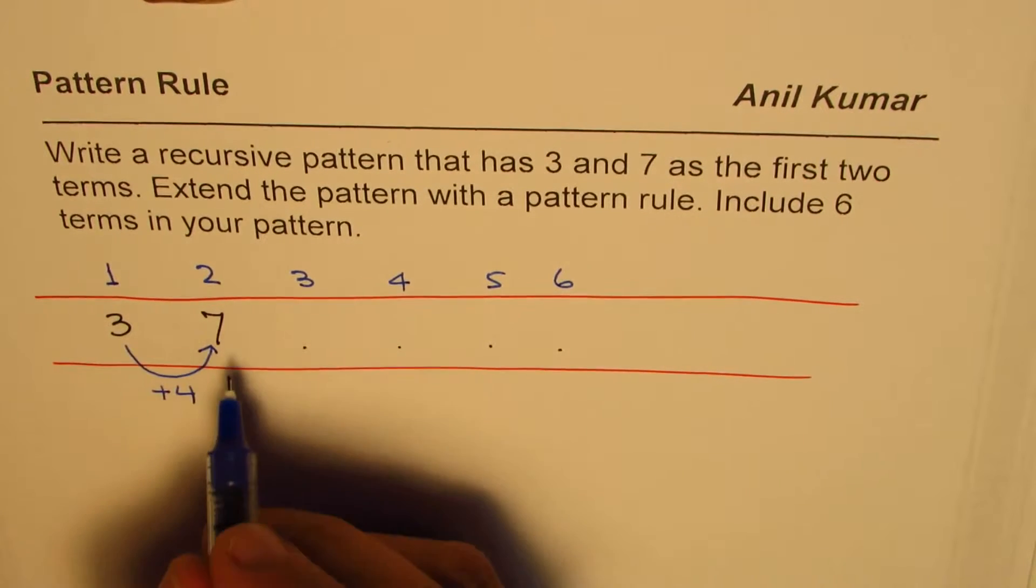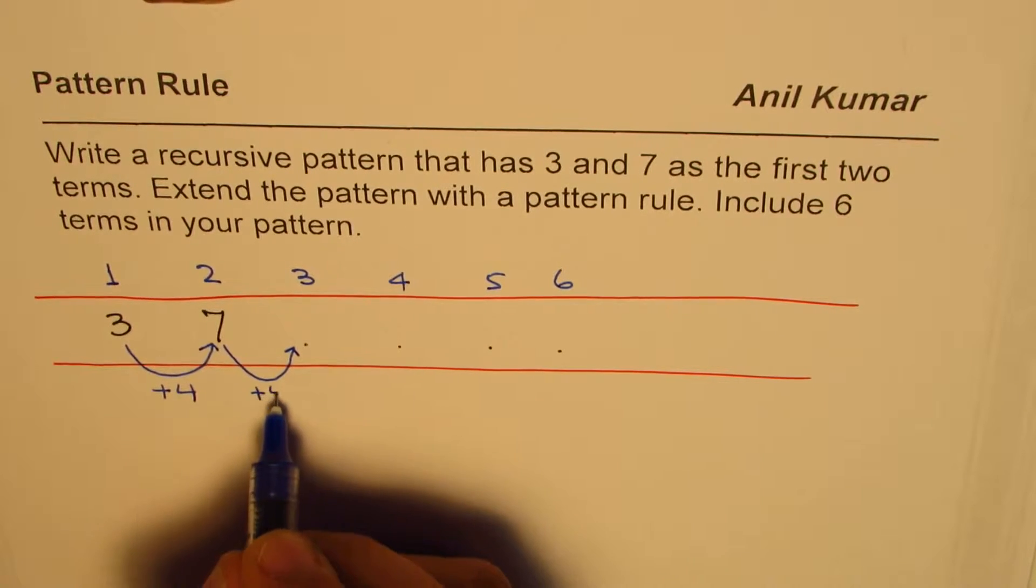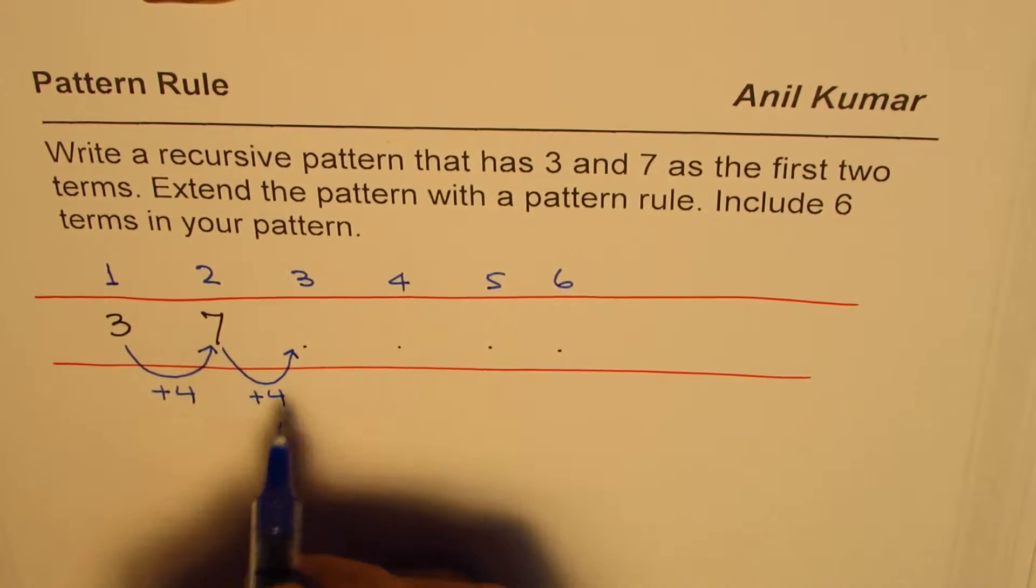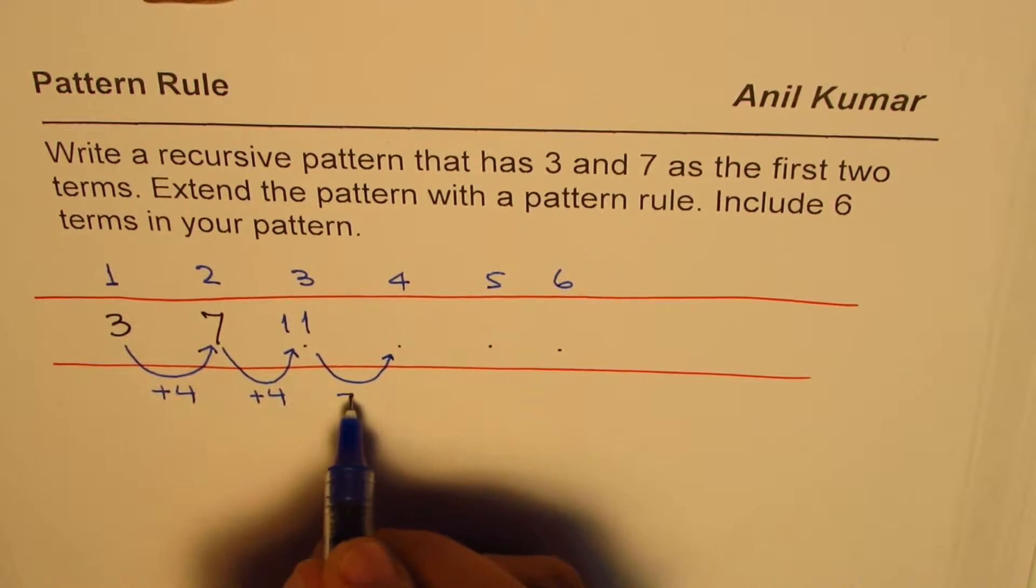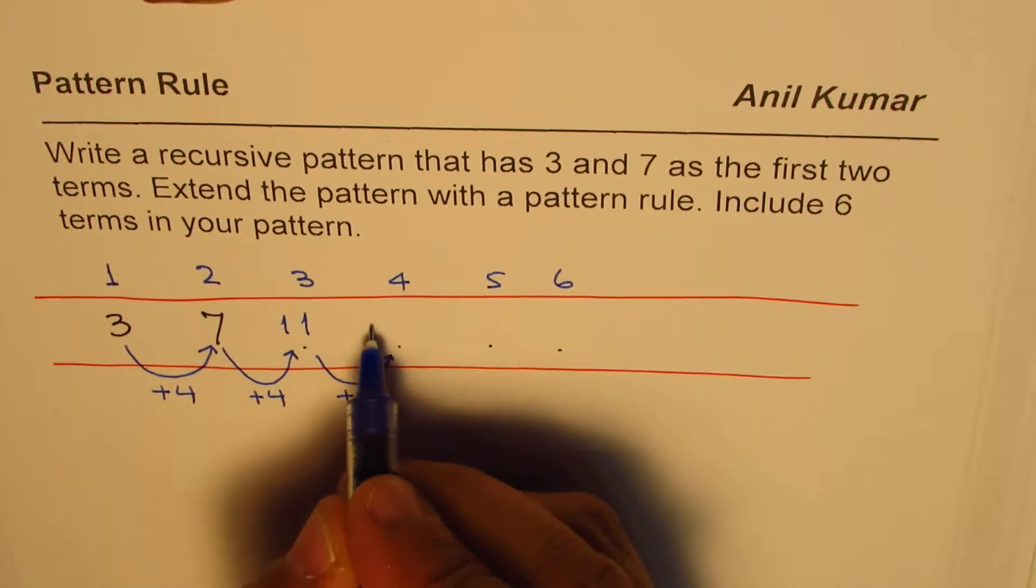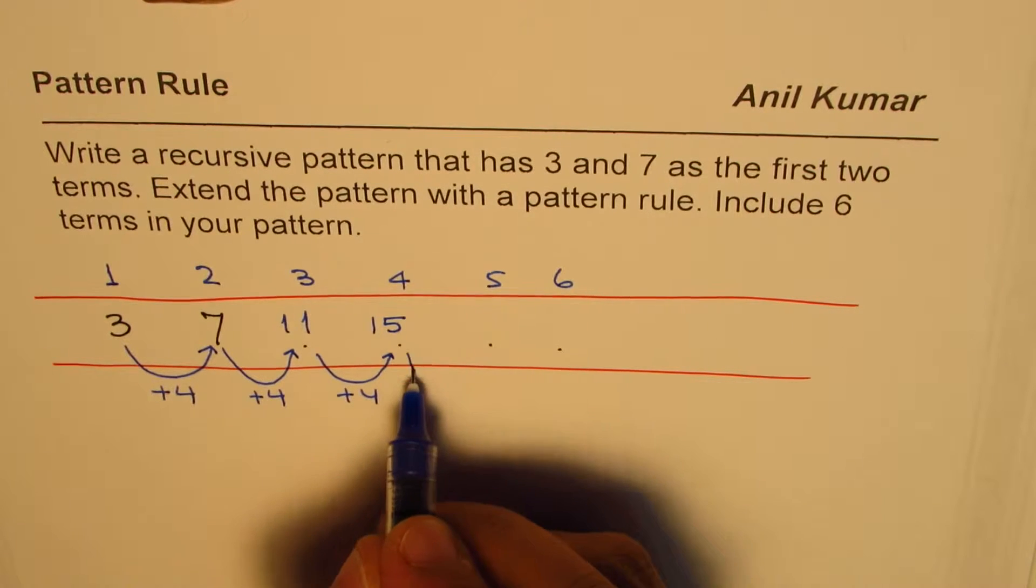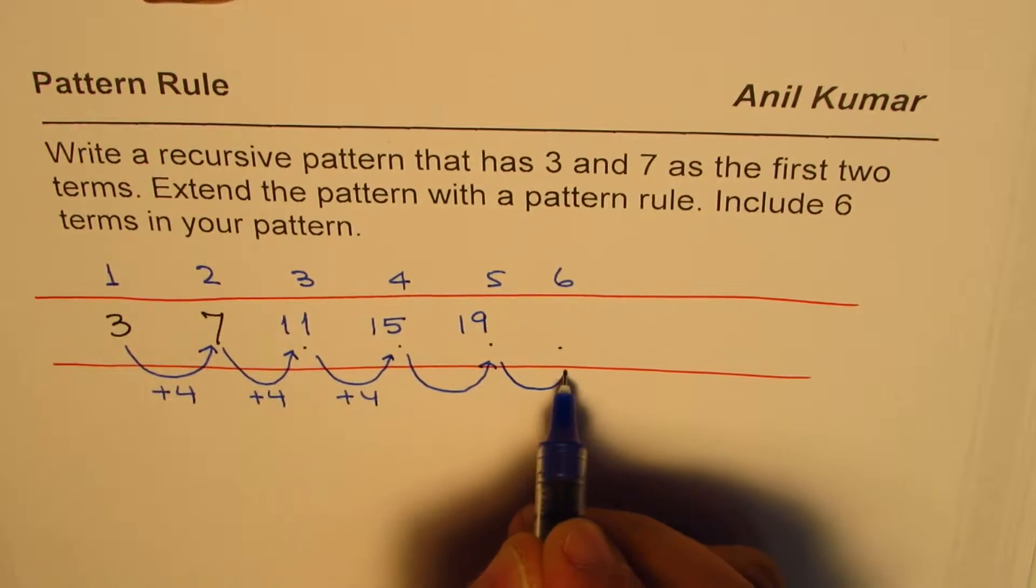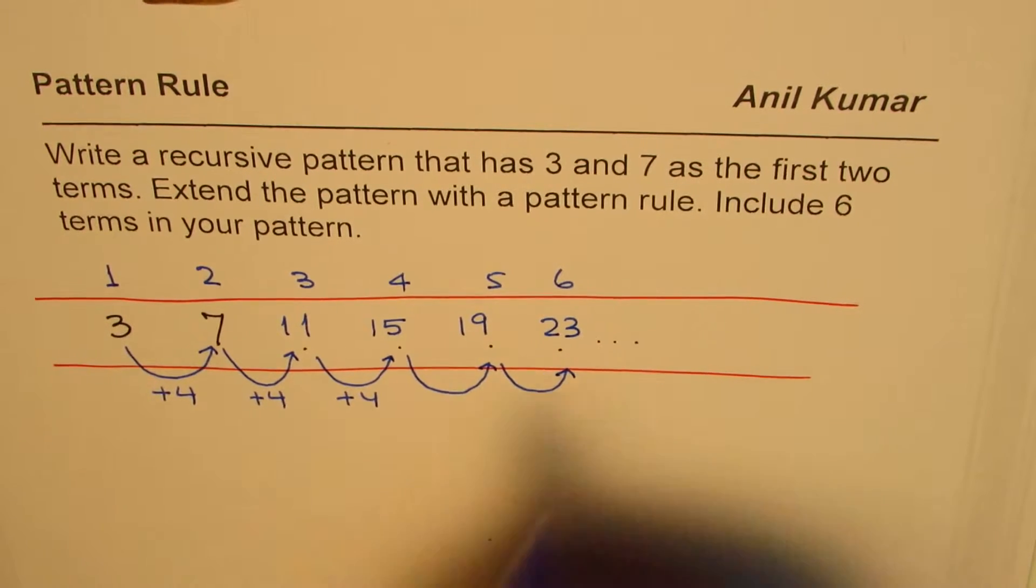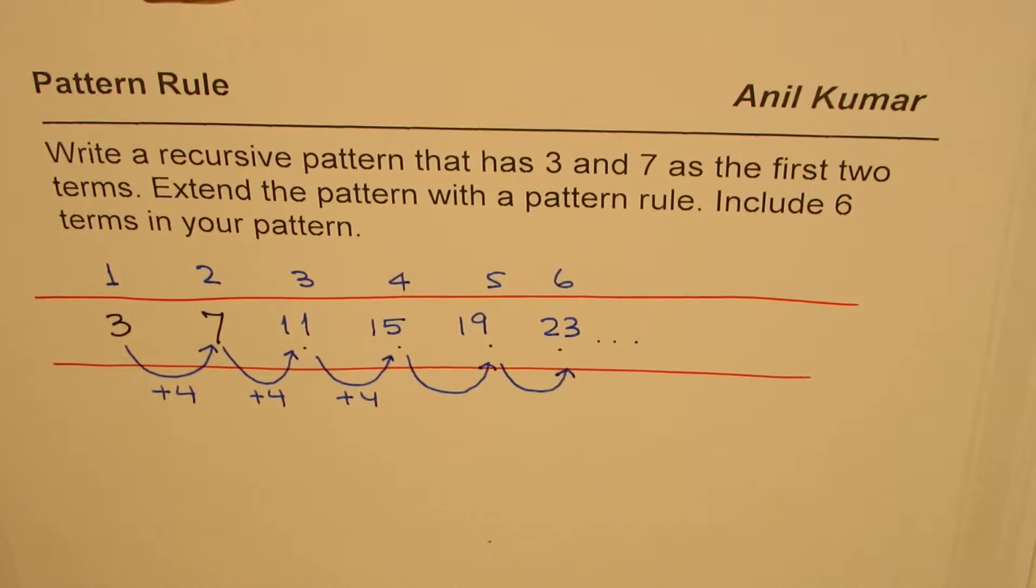Three plus four is seven, so next number I could add four again to the previous number. Seven plus four is eleven, and then again I can add four. Eleven plus four is fifteen.